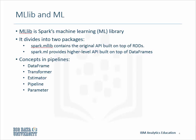A pipeline is specified as a sequence of stages, and each stage is either a transformer or an estimator. These stages are run in order, with the input data frame being transformed as it passes through each stage.